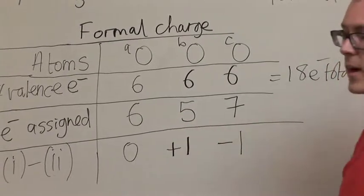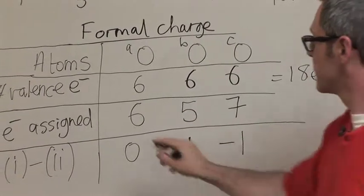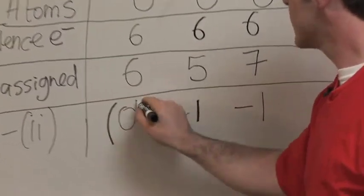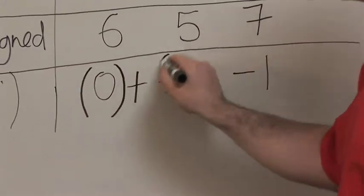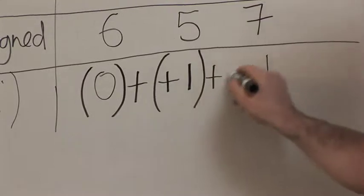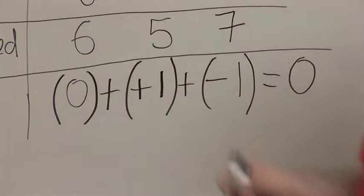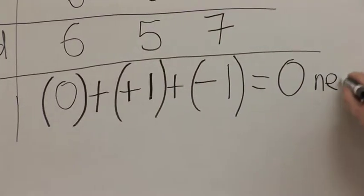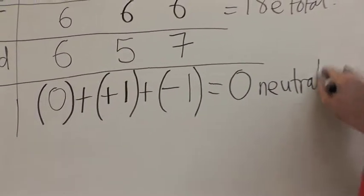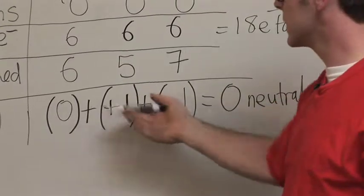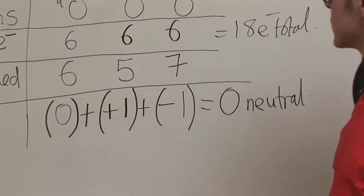Now to verify that my formal charges are correct, if I add the formal charges together, they should give me the charge on the molecule. I know the ozone is a neutral molecule. So this confirms that I have at least correct values for a formal charge.